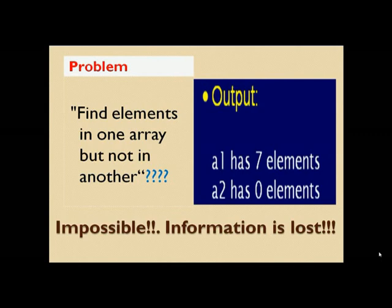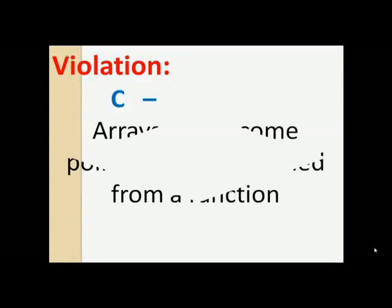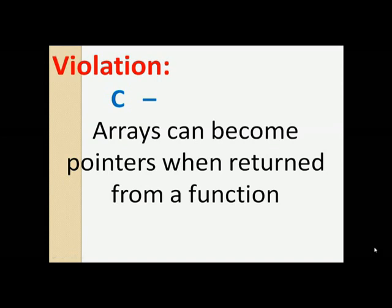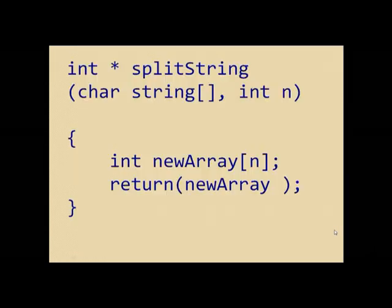Now let's go through a C programming language example where the principle is being again violated. In C, arrays can become pointers when returned from a function. This example, this is very bad.